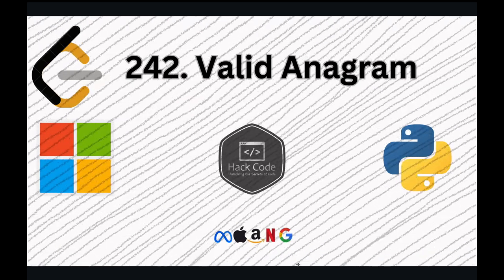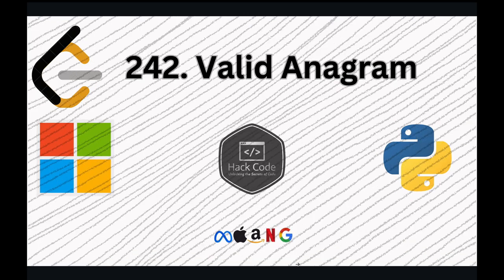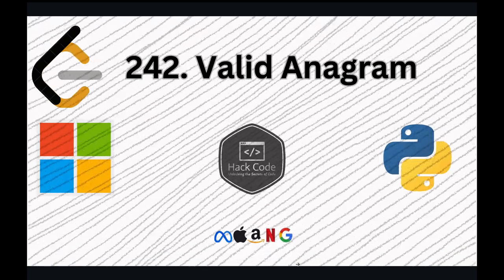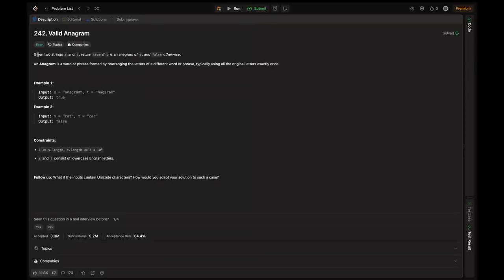One is using sorting and another one is using a hash map. Both these methods offer unique insights into handling string comparison efficiently. Let's dive in. Given two strings, s and t, return true if t is an anagram of s and false otherwise.